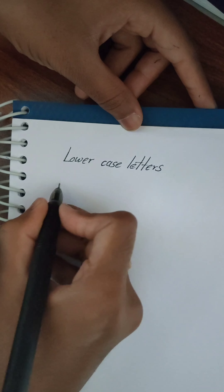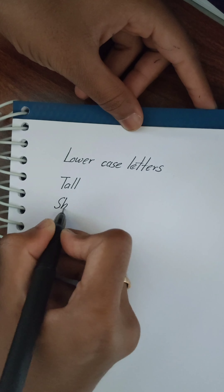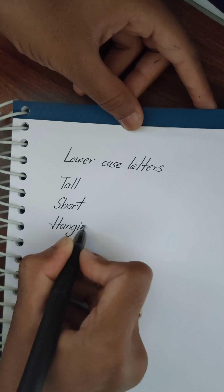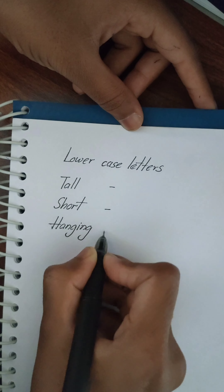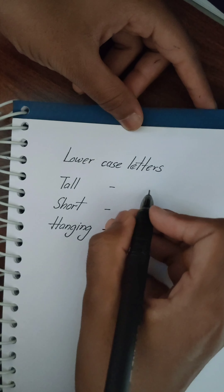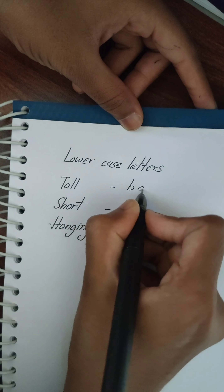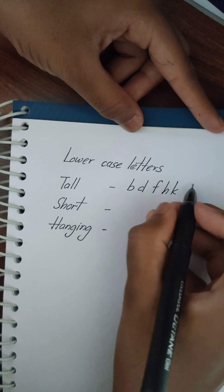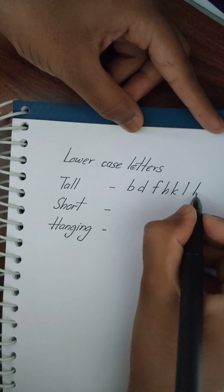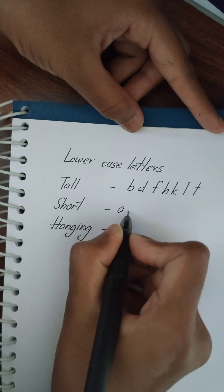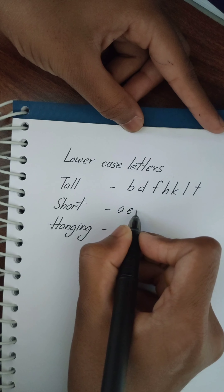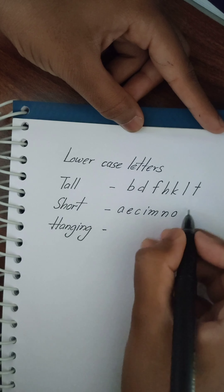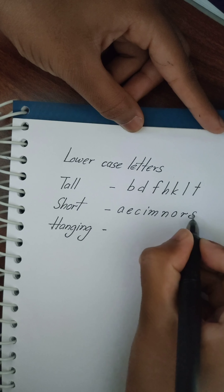We can divide lowercase letters into three categories: tall, middle or short, and hanging. Tall letters have ascenders — you can observe b, d, f, h, k fall in this category. Short or middle letters are all framed in the middle part. Hanging letters have descenders as well.